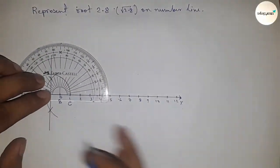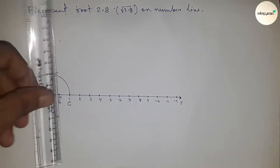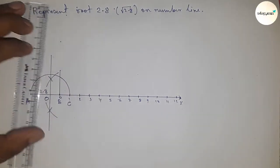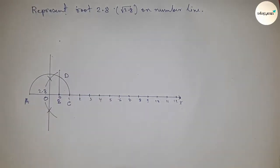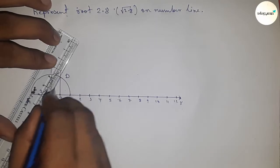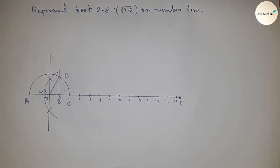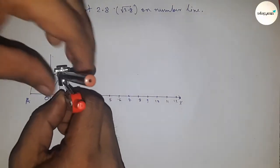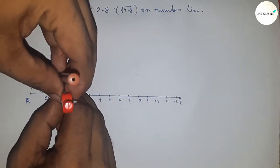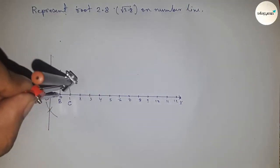Next, construct a 90-degree angle at point B. Join this, which meets the semicircle at point D. Now take the distance BD with a compass and draw an arc which meets the number line at point P.